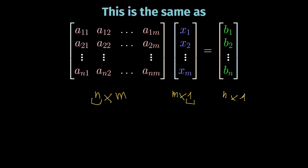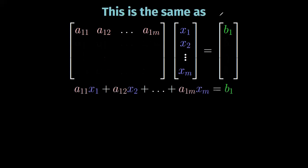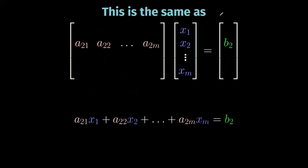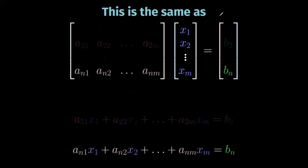What we wrote makes sense, but that's not sufficient. Let's verify that if we multiply the first two matrices we really obtain the equations of our system. The first pink row times the blue column gives the equation a11·x1 + a12·x2 + … + a1m·xm = b1. Similarly, the second line gives a21·x1 + a22·x2 + … + a2m·xm = b2. Jumping to the last row, we obtain an1·x1 + an2·x2 + … + anm·xm = bn, which is exactly the last equation of our system.